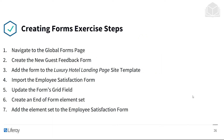In this exercise, we'll be taking the following steps. First, we'll navigate to the global forms page, then creating a new guest feedback form. We'll then add the form to the luxury hotel landing page site template, and then import the employee satisfaction form. We'll update the form's grid field, as well as create an end of form element set, and then add the element set to the employee satisfaction form.